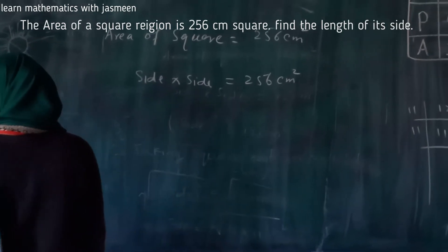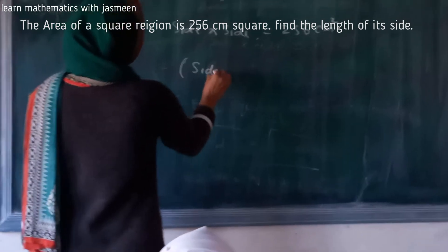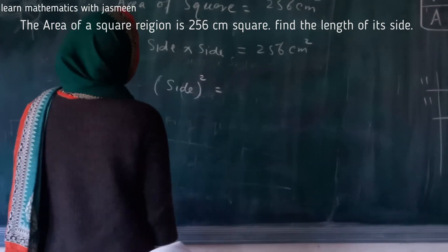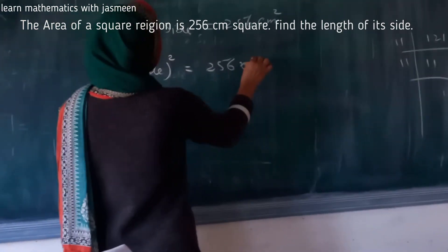Side times side, or side squared, which is equal to 256 centimeter square.